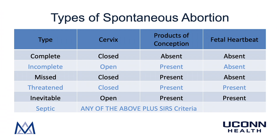An incomplete abortion is when the miscarriage process is occurring but all of the products of conception have not yet been passed. With this, the cervix would be open, the products of conception would still be partially present within the uterus, and there would be no fetal heartbeat. In a missed abortion, the cervix is closed, the products of conception remain inside the uterus, and there is an absent fetal heartbeat. Essentially, the patient has no cramping or bleeding despite the fact that the pregnancy is no longer viable.